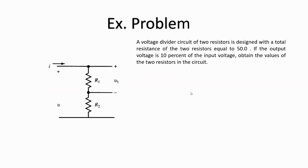Let's now look at an example problem from the Electric Circuits book from the Schaum series. They say that a voltage divider circuit consists of two resistors. The total resistance of the two resistors is given as 50 ohms, and the output voltage is 10 percent of the input voltage. We are asked to find the values of the two resistors.